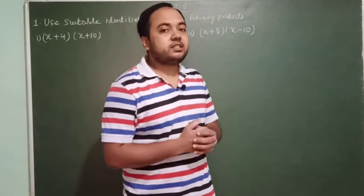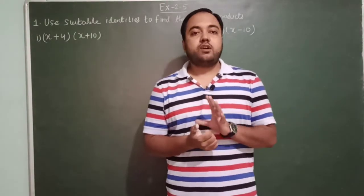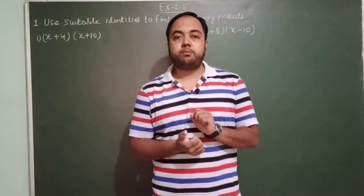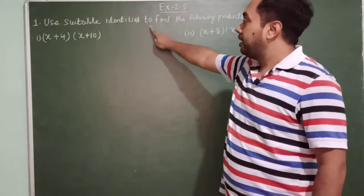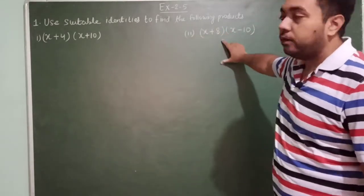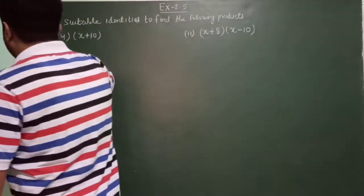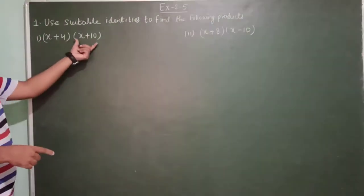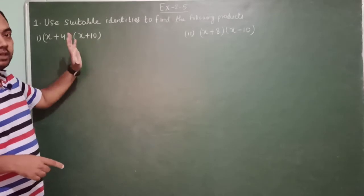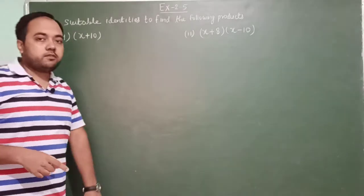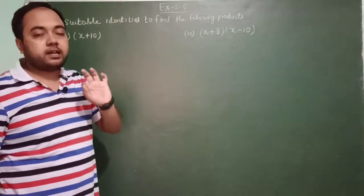Hello my dear students. In this video lecture we will study question number one of exercise 2.5. The question is: use suitable identities to find the following products. The first one is (x + 4) into (x + 10) and we need to find its product. In the previous video lecture I explained 10 algebraic identities.